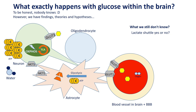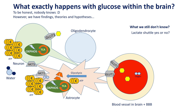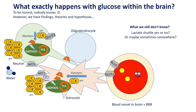Maybe astrocytes use the pyruvate themselves and neurons take up the glucose and use it directly for energy production. There is also a possibility that lactate produced by astrocytes is taken up by oligodendrocytes and then transported to neuronal axons to provide enough ATP to maintain membrane potential. It is of course possible that all of these processes occur sometimes somewhere in the brain.